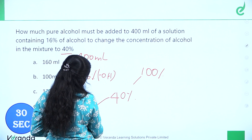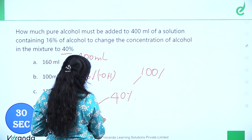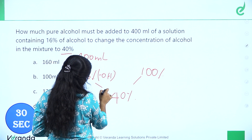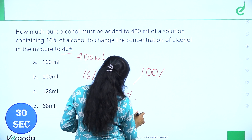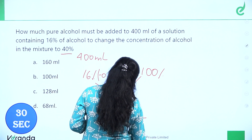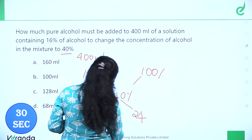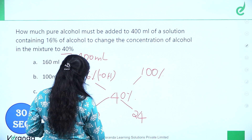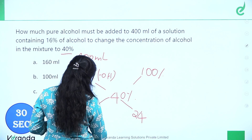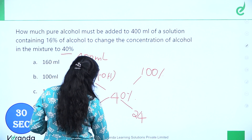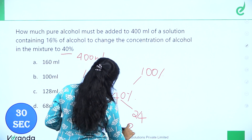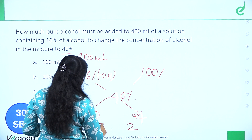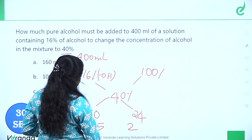Using alligation with 16% and 100%: the mean is 40%. So 100 minus 40 equals 60, and 40 minus 16 equals 24. Simplify 60 to 24 — cancel to get 5 is to 2.